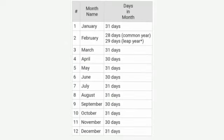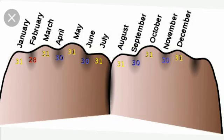See here: January has 31 days. We'll see February later. March has 31 days, April 30 days, May 31 days, June 30 days, July 31 days, August 31 days, September 30 days, October 31 days, November 30 days. Put your hands like that — see here, upper part and lower part. The months coming on the upper part have 31 days and the months coming on the lower part have 30 days.